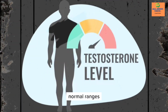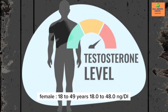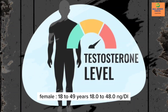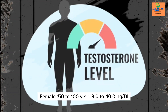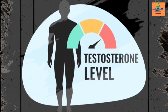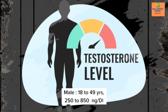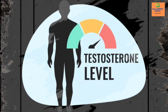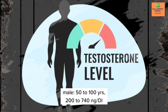Normal ranges: Female, 18 to 49 years: 18.0 to 48.0 nanograms per deciliter. Female, 50 to 100 years: 3.0 to 40.0 nanograms per deciliter. Male, 18 to 49 years: 250 to 850 nanograms per deciliter. Male, 50 to 100 years: 200 to 740 nanograms per deciliter.